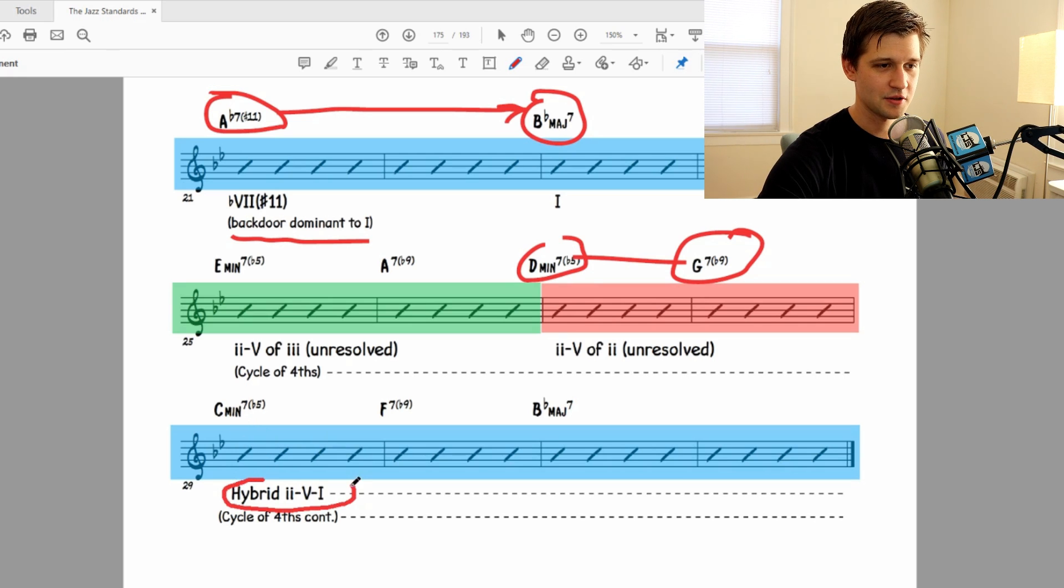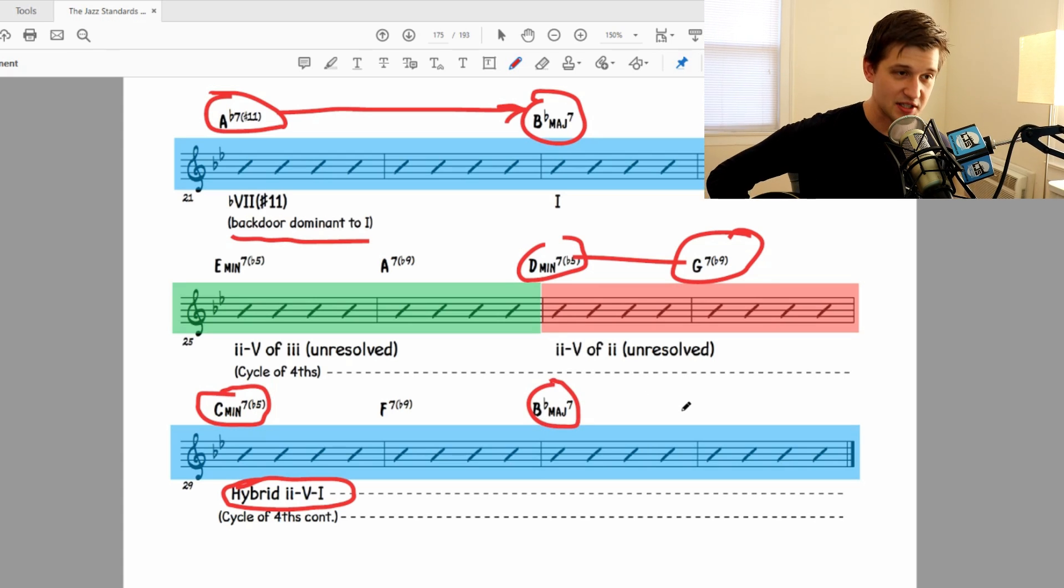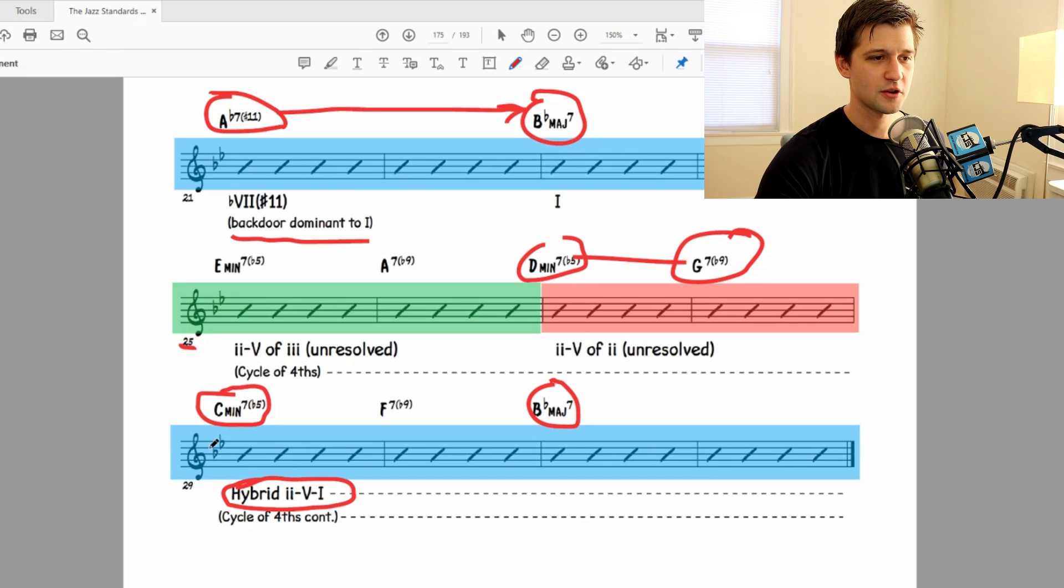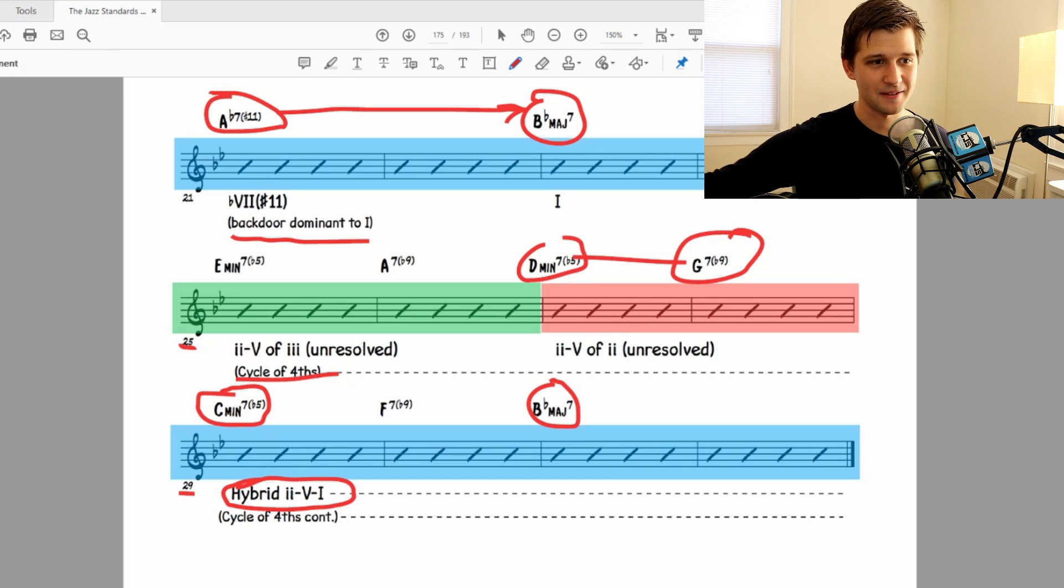Alright, then we get here, and I call this a hybrid 2-5-1. The reason I call it a hybrid 2-5-1 is because the 2 chord here, C minor 7 flat 5, indicates that we're going to go to a minor key. However, the 1 chord is not. It's a major key. So I call this a hybrid 2-5-1. We have a C minor 7 flat 5, F7 flat 9. So your ear thinks it's going to hit the minor chord, the B flat minor. It doesn't. It ends on a B flat major 7. So I call that a hybrid 2-5. And then if you look at bars 25 through 32, we have a cycle of fourths. All these chords are moving in fourths. E minor 7 flat 5, A7, D minor 7 flat 5, G7, C minor 7 flat 5, F7 flat 9, B flat major 7. All that cycling in fourths.